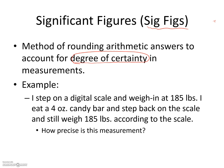Let's use an example to set us on the right path. Say I step on a digital scale and weigh in at 185 pounds. I step off, eat a 4-ounce candy bar, step back on, and still weigh 185 pounds. According to that scale, that means I can eat as many candy bars as I want and not gain weight. That really comes down to a precision question — how precise is that measurement? If my scale only measures down to the ones place,